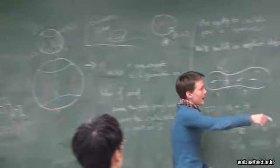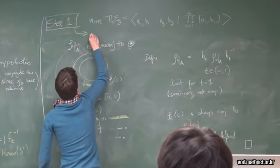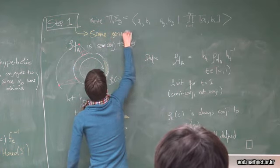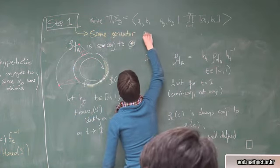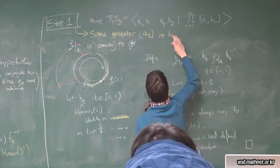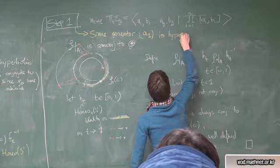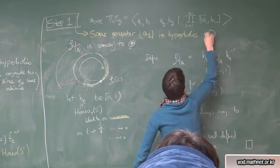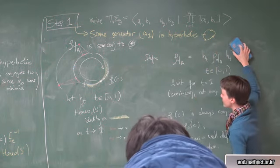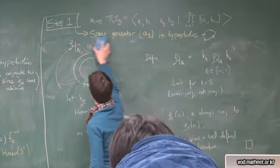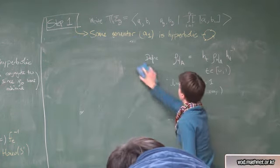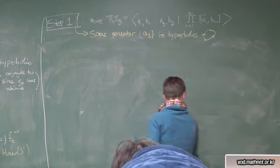Let me summarize step one. This was the statement that some generator, I can make it A_I if I want, is acting by a hyperbolic homeomorphism in the source-sync sense, the hyperbolic homeomorphism of the circle.